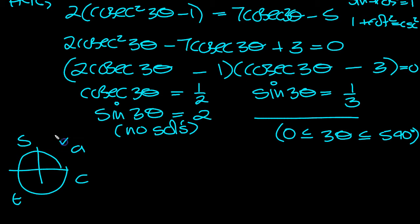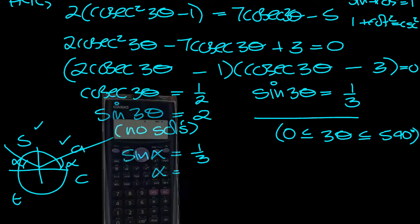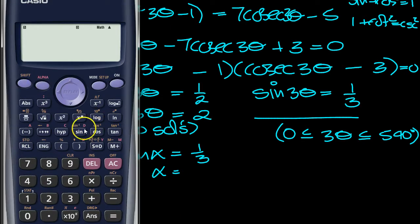Sine is positive here and here, so let's mark off these two quadrants and write down the alpha, the associated acute angle. Write sine alpha equals 1 third, so alpha is shift sine of 1 third. Make sure we're in degrees mode. Shift sine of 1 third equals 19.471.